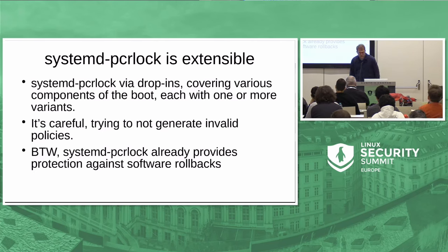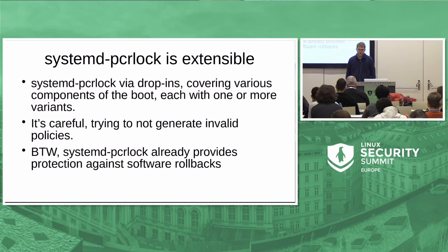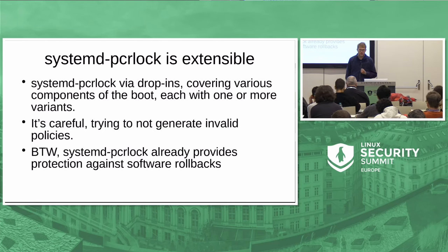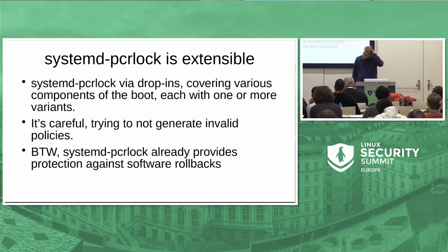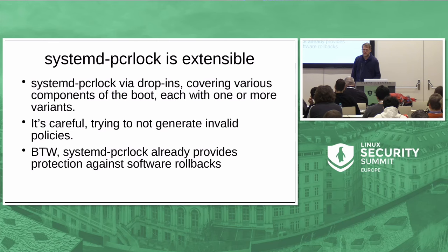One nice thing systemd-pcrlock also provides is protection against rollbacks. Windows doesn't really have that — if you use an older version of the software, can you still unlock the disk? Because we write the policy into the TPM and store it in the NV index rather than the superblock, once we update the policy the old policy is automatically and necessarily invalidated — nobody can use it anymore because it's not stored in the NV index anymore, only the new one is. This was an open problem from my last talk's to-do list, and this is my answer — we figured that out.